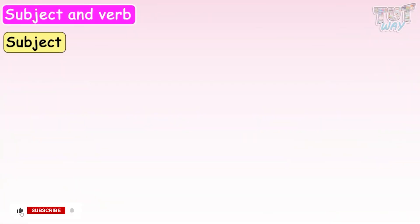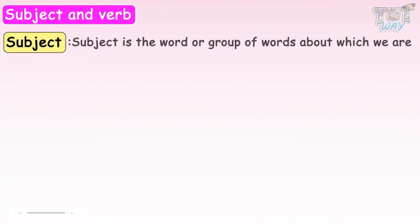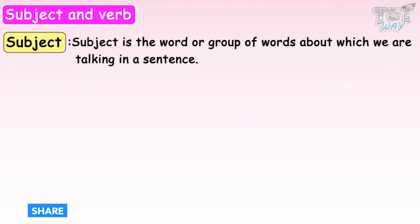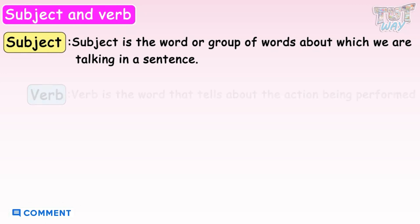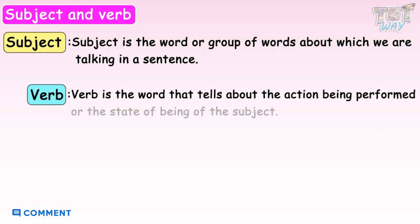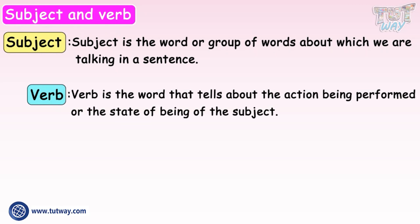First of all, what is a subject? Subject is the word or group of words about which we are talking in a sentence. And verb is a word that tells about the action being performed or the state of being of the subject.